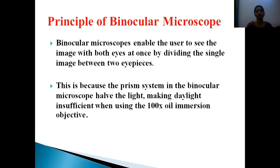The principle of binocular microscope: A binocular microscope enables the user to see the image with both eyes at once by dividing the single image between two eyepieces. The prism system in the binocular microscope halves the light, making daylight insufficient when using the 100x oil immersion objective.